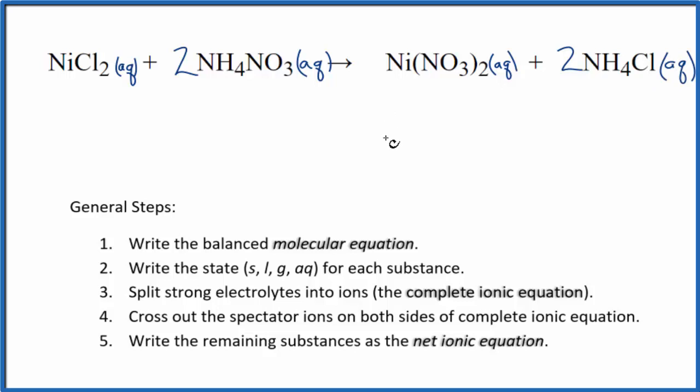Because of that, when we write the complete ionic equation, we'll have all these ions in the reactants and the exact same ions in the products. Then when we cross out our spectator ions, everything will cross out. There won't be anything there.